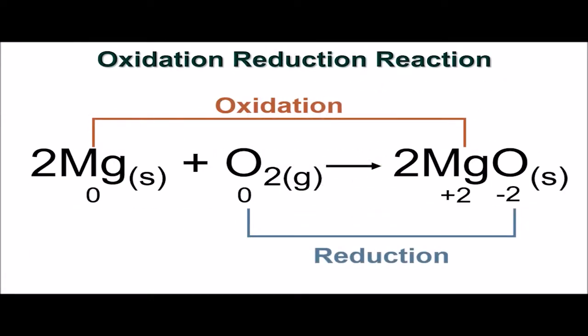This example shows the oxidation states of magnesium and oxygen in a redox reaction. You can see how oxidation states allow us to track electrons. The magnesium has been oxidized because it has lost electrons, and the oxygen has been reduced because it has gained electrons.